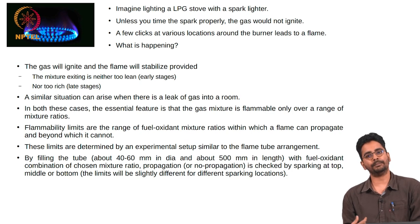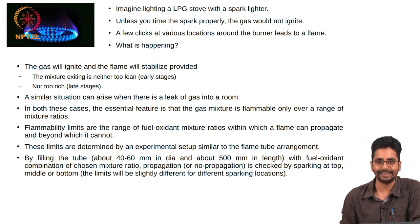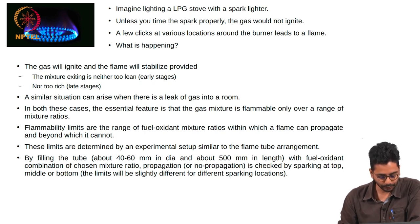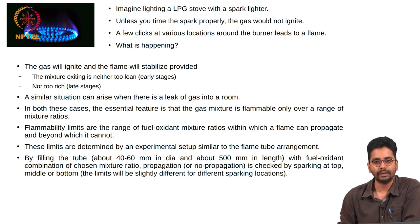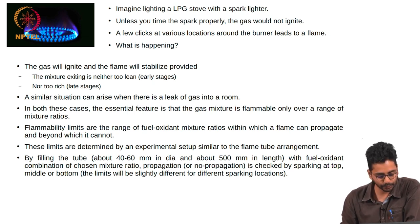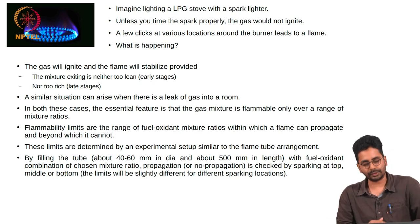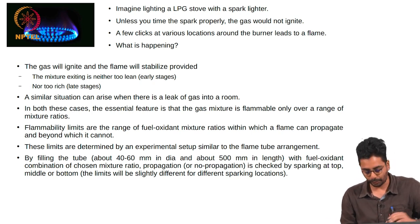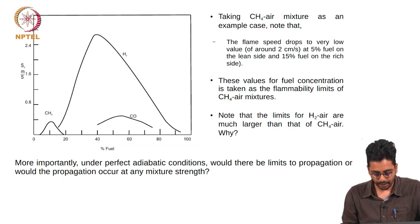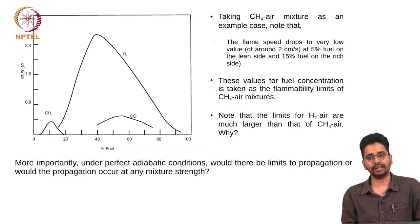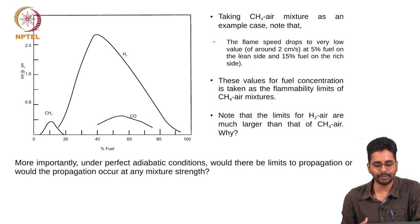The experimental setup for determining the flammability limits is essentially the same. By filling a tube of diameter about 40 to 60 millimeters and about 500 millimeters in length with a fuel-oxidant combination of chosen mixture ratio, propagation or no propagation is checked by sparking at three locations: top, middle, or bottom. The limits will depend on where the ignition occurs.